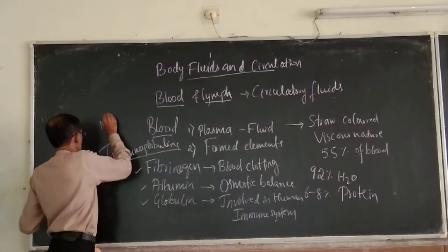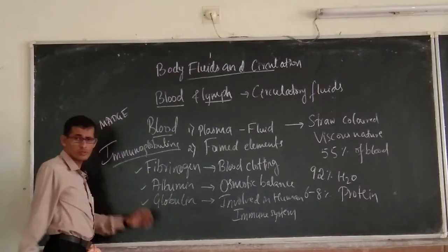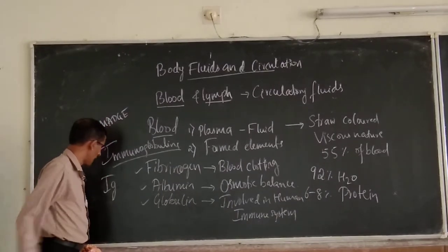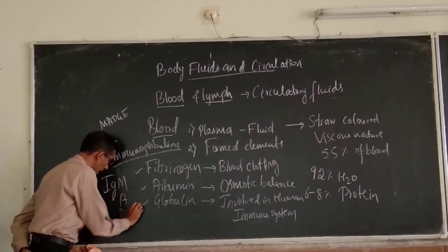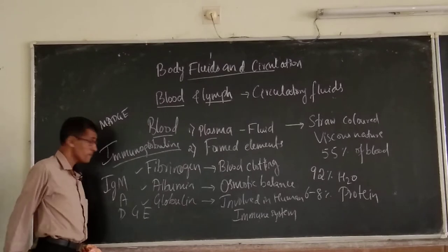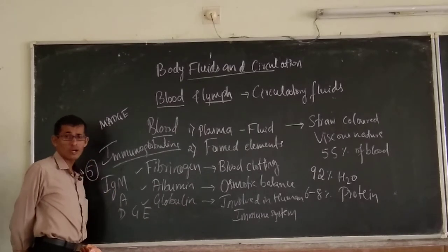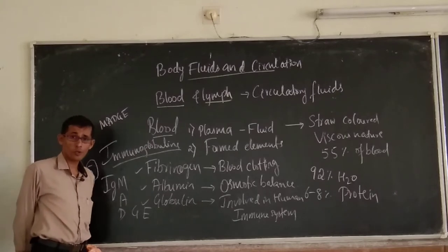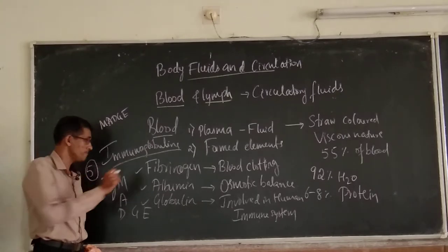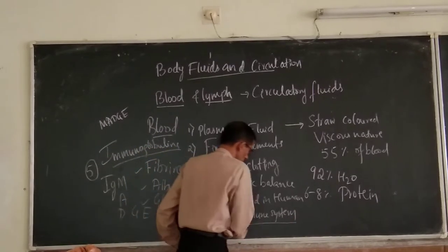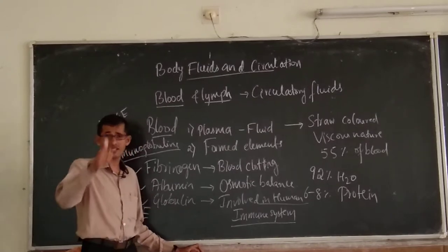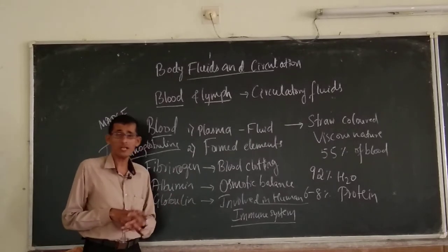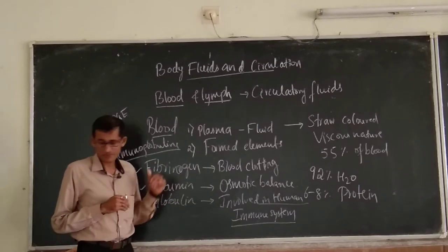Globulin proteins involved in the immune system are called immunoglobulins, represented as Ig. There are five different types: IgM, IgA, IgD, IgG, and IgE. These immunoglobulins form part of the defense system, fighting against infections and chemicals produced by infectious agents.